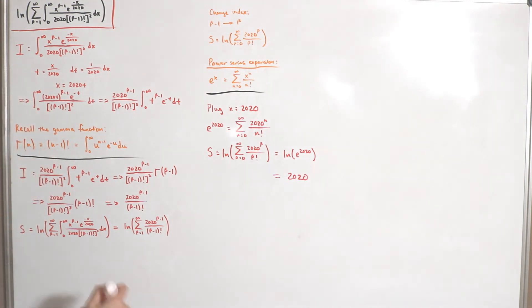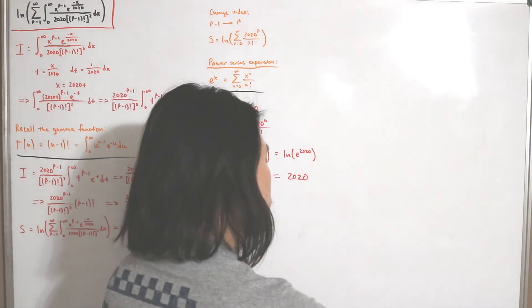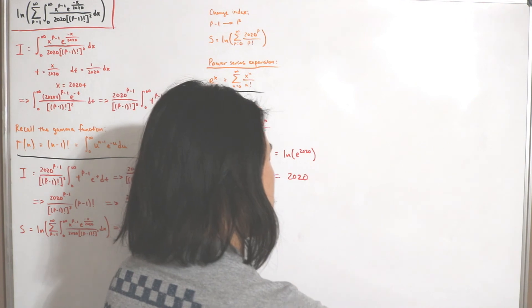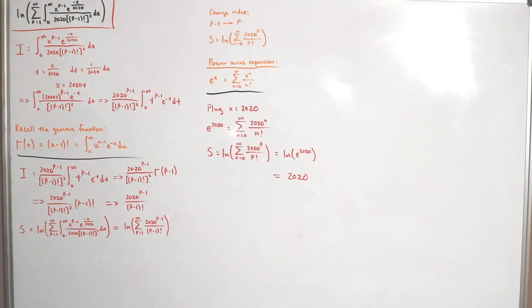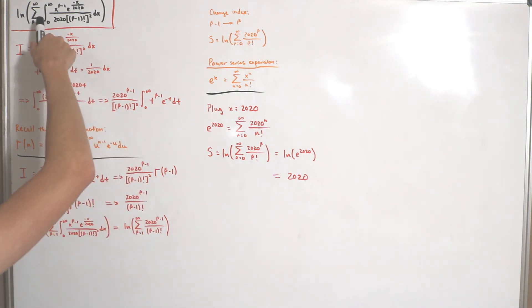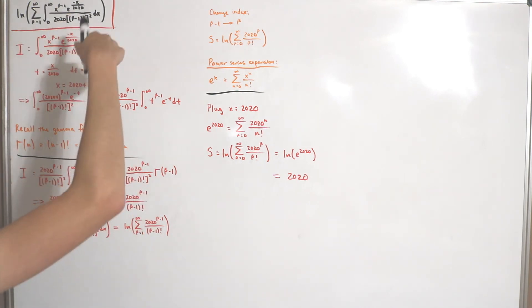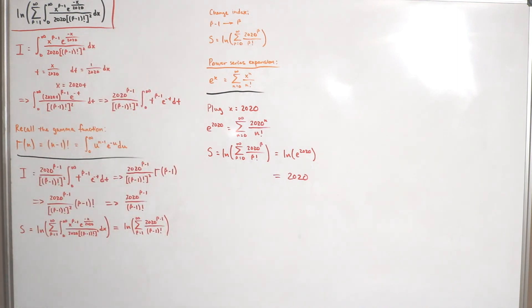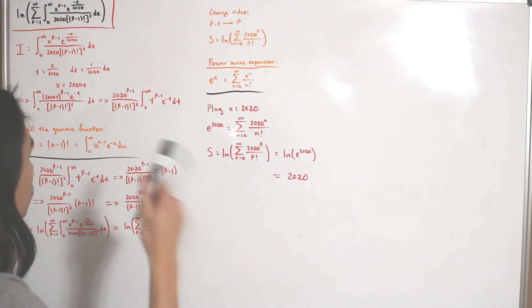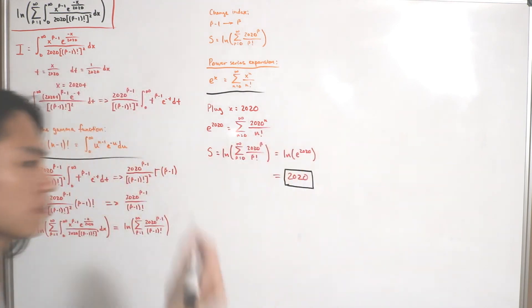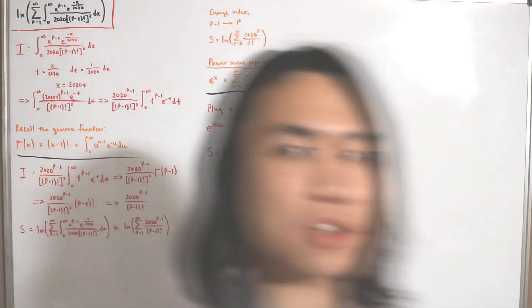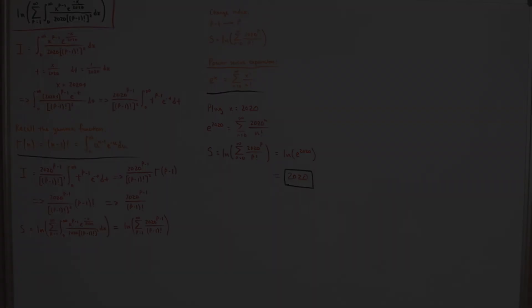And therefore we are done. The natural log of the infinite sum of the integral of x to the beta minus 1, times e to the negative x over 2020, divided by 2020 times beta minus 1 factorial quantity squared, dx equals 2020. That's pretty cool.